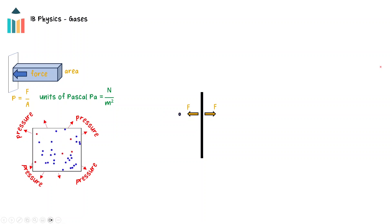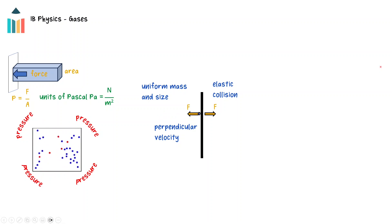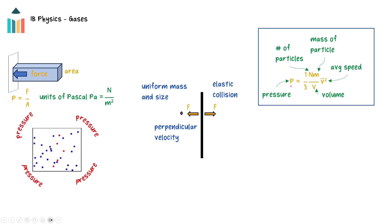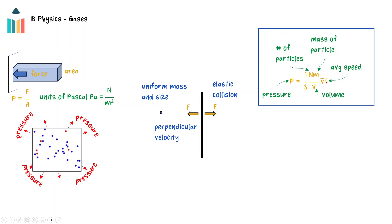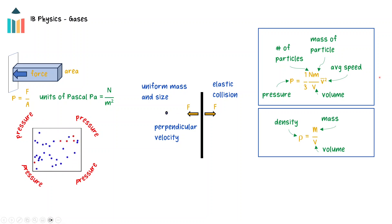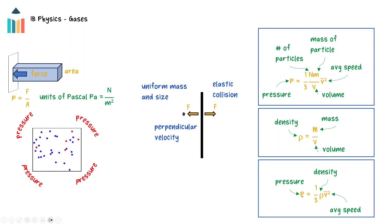Applying the conditions for an ideal gas, in which the particle collisions are elastic, the particles are uniform in mass and size, and using the components of the particle velocities that are perpendicular to the container wall, the relationship between the pressure of the gas, the volume of the container, and the average velocity can be derived. The pressure will be higher if there are more particles or if the gas particles are more massive, and will decrease if the gas occupies more volume, but pressure will increase with the square of the speed with which the particles collide with the container walls. Using the fact that density is the ratio of mass to volume, the equation simplifies to: pressure equals one-third times the density times the average speed squared.